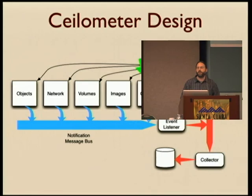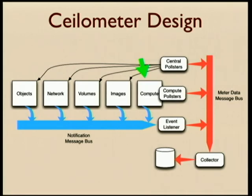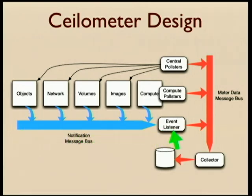With all of these things in mind, we designed Ceilometer to be flexible in several different areas. This is a diagram explaining what the OpenStack system looks like — a collection of components that cooperate to provide infrastructure-as-a-service features for a cloud. Each component manages a different aspect of the cloud and uses a message bus to communicate. All components generate notification messages when events happen, such as when you create or delete an instance. Capturing those messages was the first source of data for Ceilometer, but the notifications contain different metadata depending on the resource that triggered the event, so we needed a set of plugins in the event listener to translate those messages into a standard format.